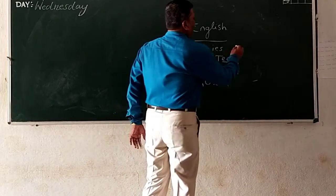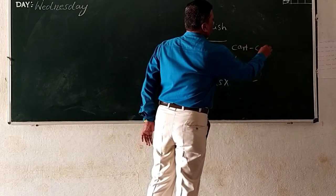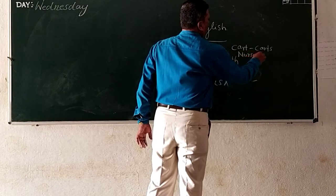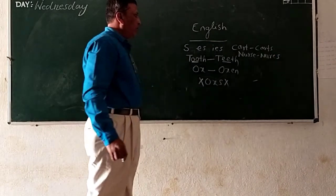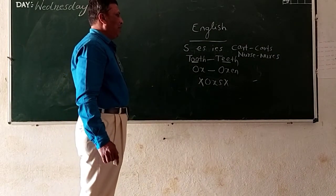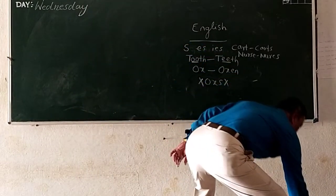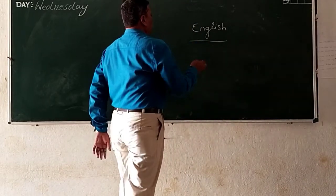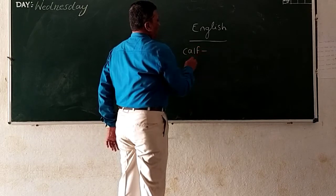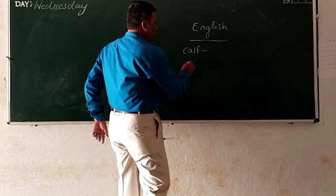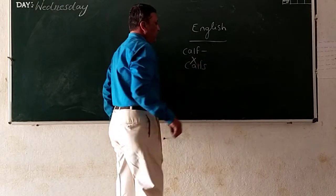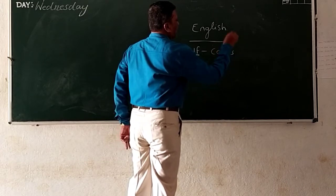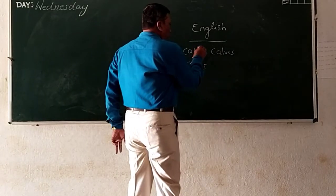And another example I will give you: calf. What we have to do? Calf, calves. So these are some examples. Then I will give you more examples. Just you see, calf. What is the plural of calf? No, wrong. Why sir? Because if F appears, we are going to make it calves: C-A-L-V-E-S.